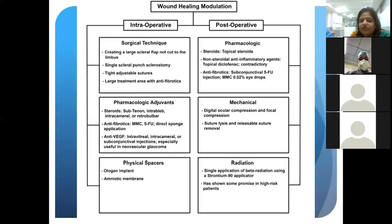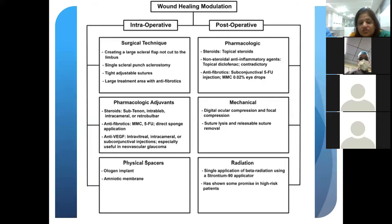Pharmacological adjuvants include steroids and antifibrotics. There is also growing interest in the role of anti-VEGF, primarily in the management of neovascular glaucoma, where it can reduce intra-operative or post-operative hyphema and cause transient regression of new vessels in the iris and angle. Physical spacers such as ologen and amniotic membrane, by virtue of creating air space, prevent adhesion between the conjunctiva and the underlying episclera.